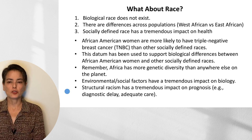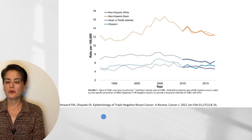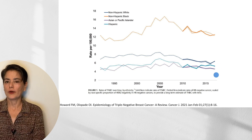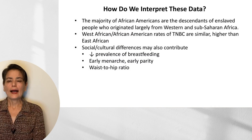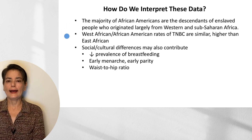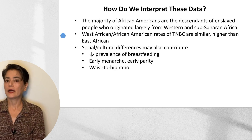Structural racism has a tremendous impact on prognosis because of diagnostic delay and inadequate care. Data from Dr. Olopade's review paper shows that this particularly aggressive type of breast cancer is more common in African-Americans, much lower in other socially defined races and ethnicities. The majority of African-Americans are descendants of enslaved people who originated largely from Western and Sub-Saharan Africa. When we look at rates of triple negative breast cancer in West Africa, they are higher than in East African women and comparable to what we see in African-American women — suggesting a population-based difference, not a socially defined race-based difference.